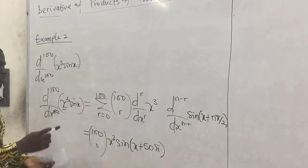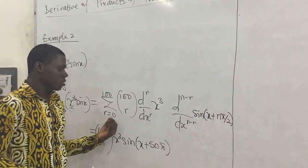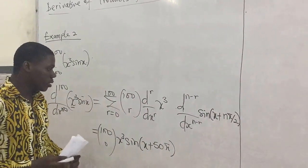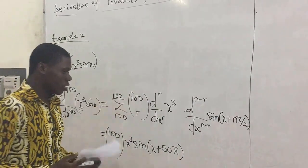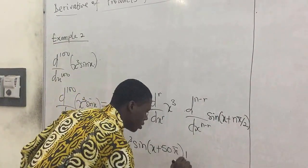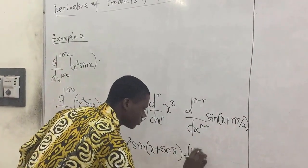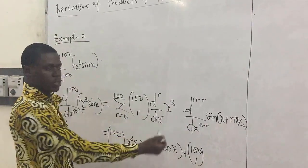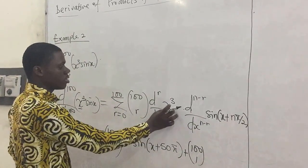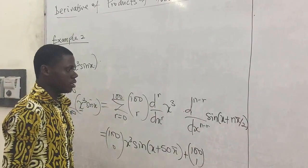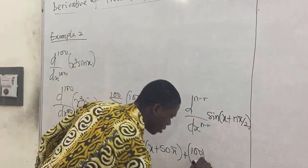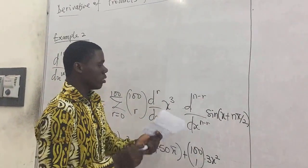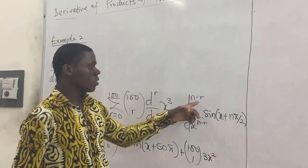We have finished the first derivative. Let's move on to the second. It means r becomes 1. Now, if r is 1, we're going to have 100 combination 1. When we come here, when we differentiate this, if r becomes 1, so first derivative, the first differential here is 3x squared, so we multiply by 3x squared.